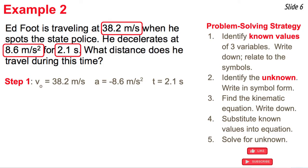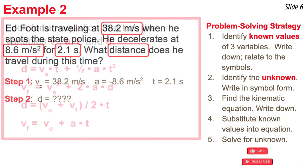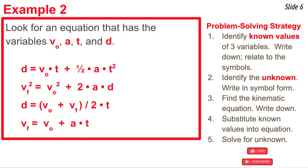Now I'm going to look for the unknown value. It says, what distance does he travel during this 2.1 seconds of time? So the unknown is distance. I'm going to write that down as d equal question mark. Now I have three known values and one unknown value. That's four variable symbols in all. I'm going to look through my list of equations, here they are, for the one that has VO, A, T, and D. And that ends up being the first equation in the list.